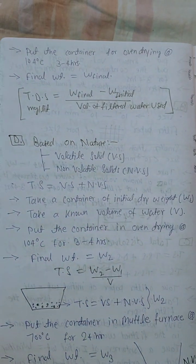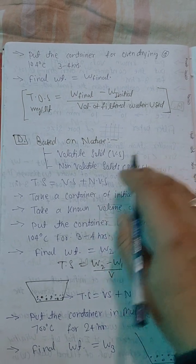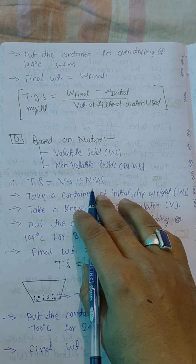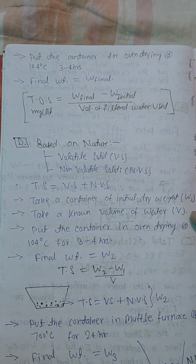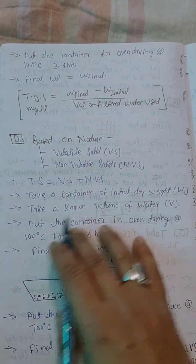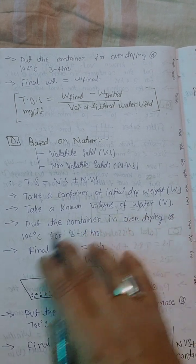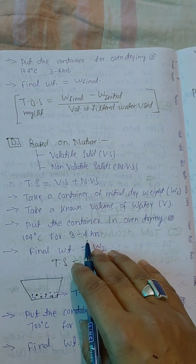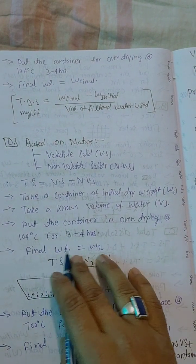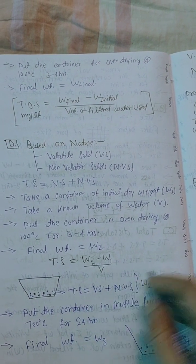Based on nature, solids are classified as: volatile solids (VS) and non-volatile solids (NVS). Total solid equals volatile solid plus non-volatile solid. To measure: take a container of initial dry weight W1, add a known volume of water V, and place in an oven dry method at 104 degrees Celsius for 3 to 4 hours. Final weight equals W2. Total solid equals (W2 minus W1) divided by V.